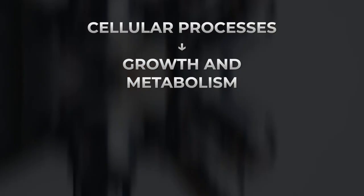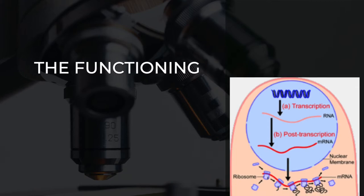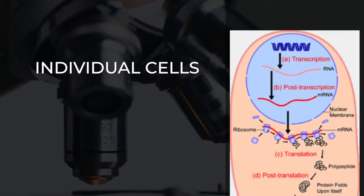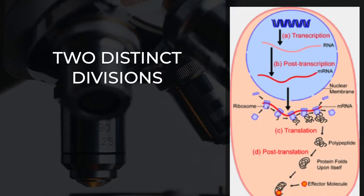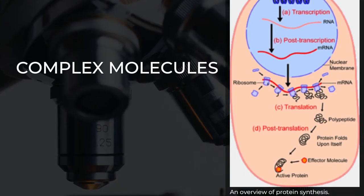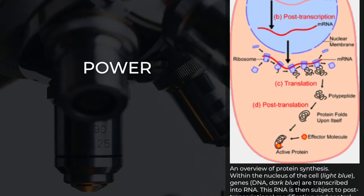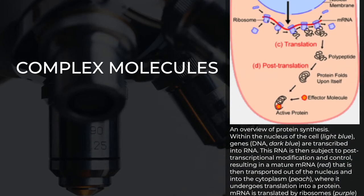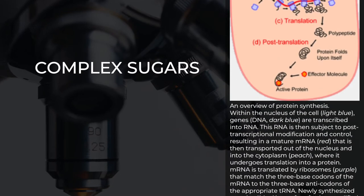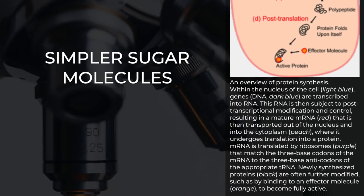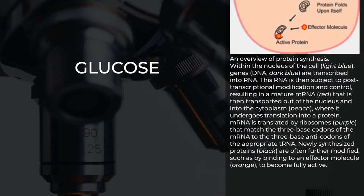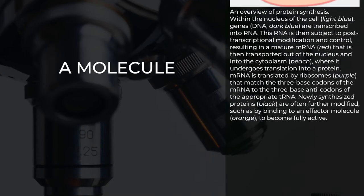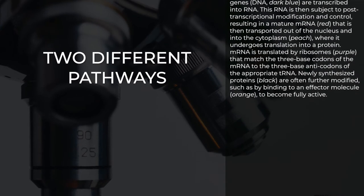Between successive cell divisions, cells grow through the functioning of cellular metabolism. Cell metabolism is the process by which individual cells process nutrient molecules. Metabolism has two distinct divisions: catabolism, in which the cell breaks down complex molecules to produce energy and reducing power, and anabolism, in which the cell uses energy and reducing power to construct complex molecules and perform other biological functions. Complex sugars consumed by the organism can be broken down into simpler sugar molecules called monosaccharides such as glucose. Once inside the cell, glucose is broken down to make adenosine triphosphate, ATP, a molecule that possesses readily available energy, through two different pathways.